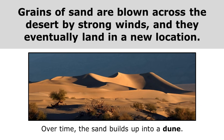Grains of sand are blown across the desert by strong winds and eventually land in a new location, where they get deposited and build up over time into a dune. Sand dunes are caused as strong winds blow sand across the desert and that sand is deposited into these hills that we call dunes.